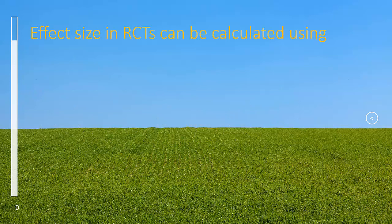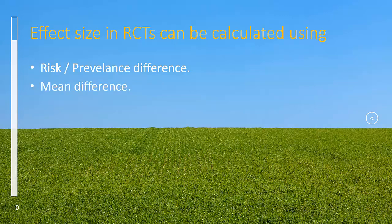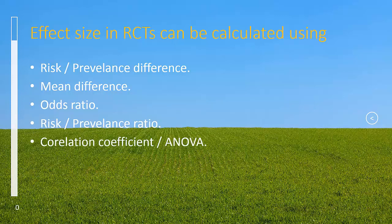Effect size in randomized controlled trials can be calculated for risk or prevalence difference, mean difference, odds ratio, risk or prevalence ratio, correlation coefficient or ANOVA.